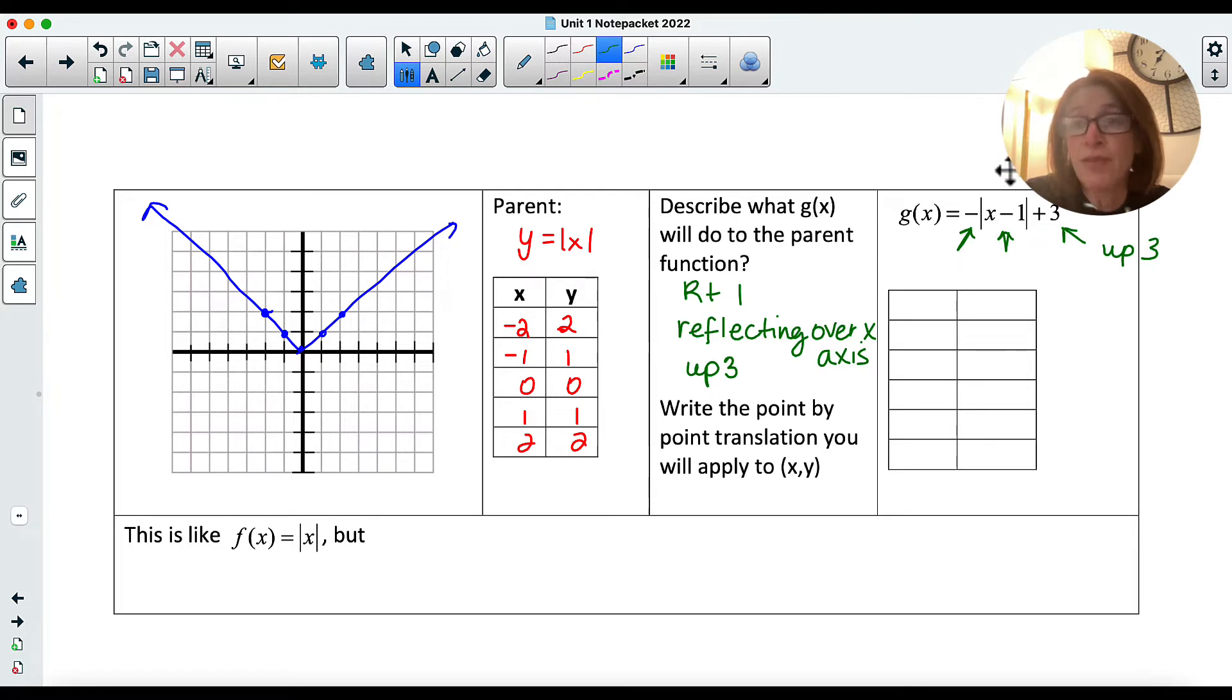Now remember, on the inside of the function, it changed the x's. So our point-by-point translation, it's going to change the x's, where on the outside, it's going to change the y's. So let's try this. That would be x comma y is going to turn into x plus 1. Remember, it's always the opposite on the inside, comma, negative y plus 3. So this is a little bit harder, because I've got three different translations and reflections in there. So that tells me to the parent function, I'm going to take all my x's, I'm going to add 1. So negative 1, 0, 1, 2, 3. All my y's, I'm going to make them negative, and then I'm going to add 3 to them. So negative 2 plus 3 is 1, negative 1 plus 3 is 2, 0 plus 3 is 3, negative 1 plus 3 is 2, and negative 2 plus 3 is 1.